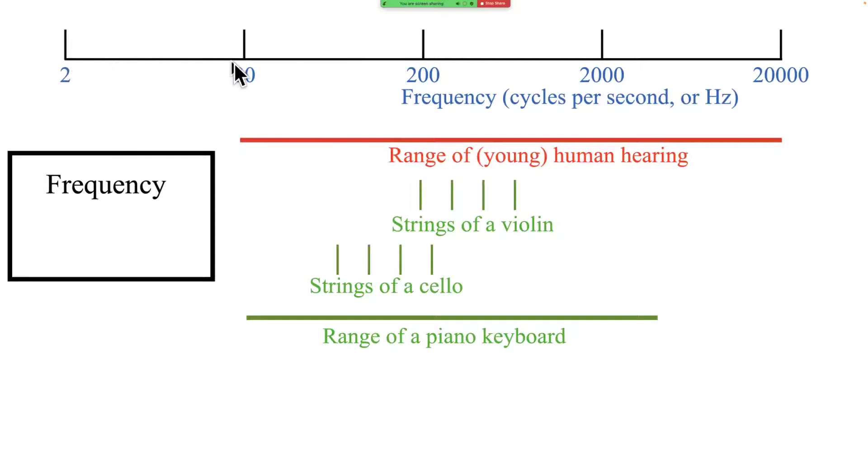2 hertz, 20 hertz, 200, 2000, 20,000 or 20 kilohertz. That range covers the whole frequency spread that humans are capable of hearing. This red line here indicates the range of hearing of a young human. I don't hear as high as that these days, but when we're young we may hear as low as about 20 hertz and up to about 20 kilohertz.